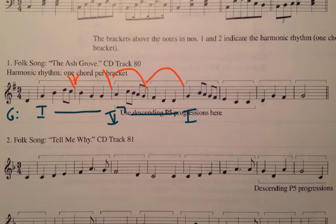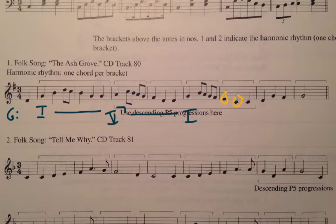In the next measure, we have an E and a C. That actually suggests C, E, G — which is our subdominant chord — and that's what I think we'll use here: the subdominant chord.